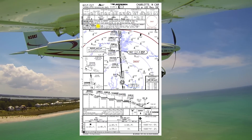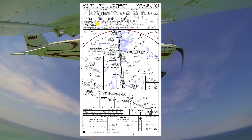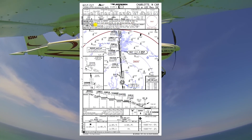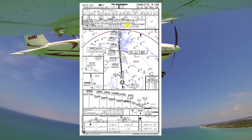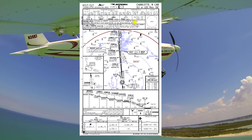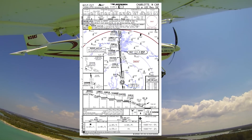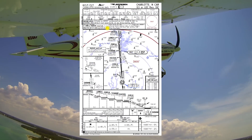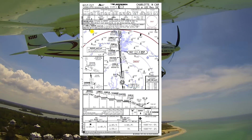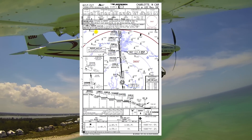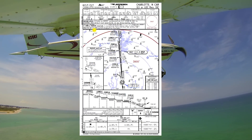Missed approach instructions: climb to 3000 feet, outbound on the Charlotte radial 181 to Denny intersection, 12.7 DME from Charlotte, and hold — or as directed by ATC. Most likely you're just going to get vectored. Any other pertinent notes: DME or radar is required, will not be circling at night, simultaneous approaches are in use, and the visual glide slope indicator and ILS glide path are not coincident. That's a good note there.